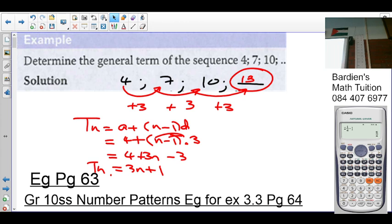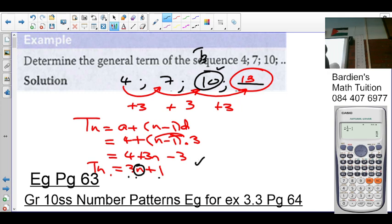Is there any confusion? We can test it. What term is this? Term 3. So if I put the 3 where I see n, what's 3 times 3 plus 1? It's 10. So here's my general term. Normally if I test, I don't test on term 1. I can test on any other term. Is there any confusion here? You understand? Let's carry on.